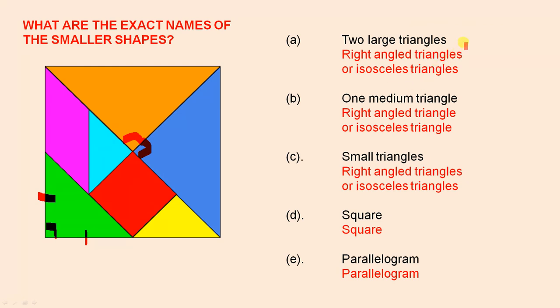So the only specific ones are the triangles, which are right angled and they're also isosceles.